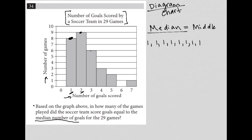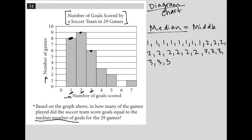And then two should be listed out nine times: one, two, three, four, five, six, seven, eight, nine. And then there were six games where the goals scored were three: one, two, three, four, five, six. That takes care of that.